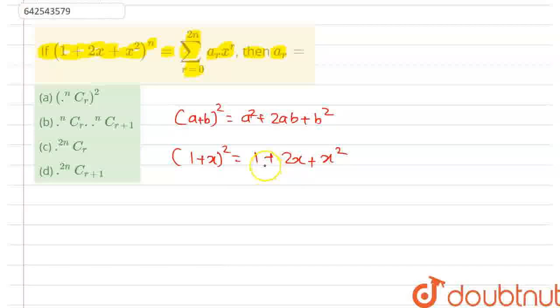So in place of 1 + 2x + x², we can write (1 + x)². So this term will be equal to (1 + x)² to the power n. Now, this will be equal to (1 + x)²ⁿ.